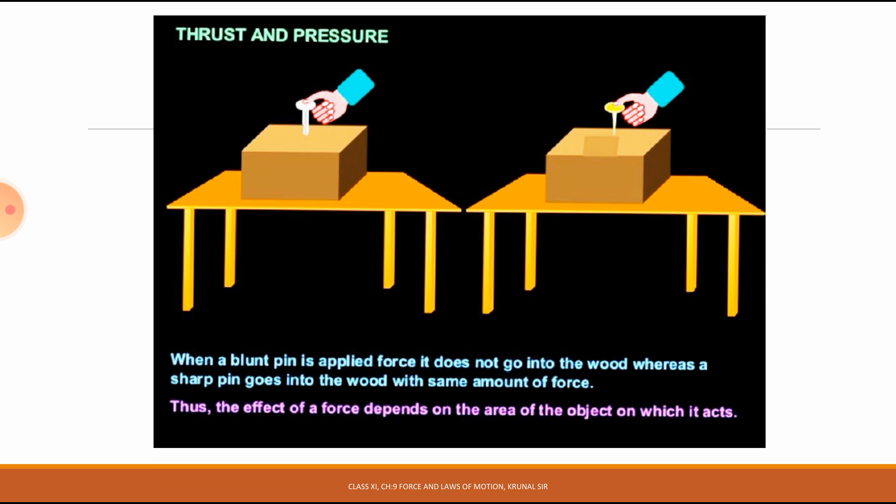So here we apply the same amount of force. The sharp pin goes into the wood, but the blunt pin does not. Thus, the effect of force depends on the area of the object on which it acts.